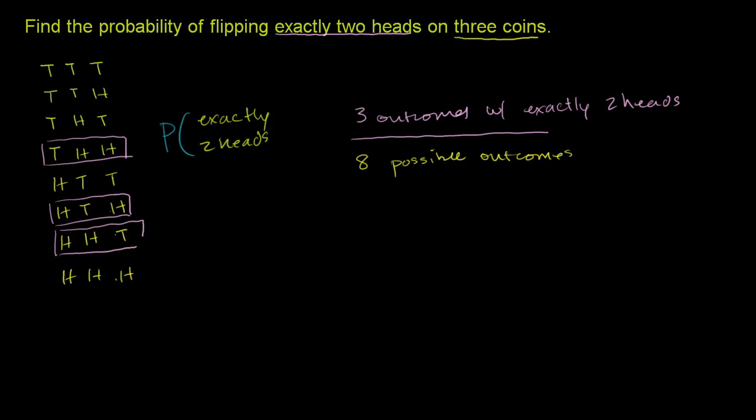So the probability of flipping exactly two heads is equal to three-eighths, the three outcomes with two heads divided by the eight possible outcomes, or three-eighths. So it is equal to three-eighths. And we are done.